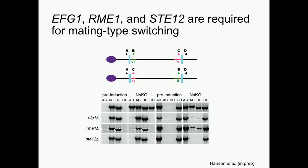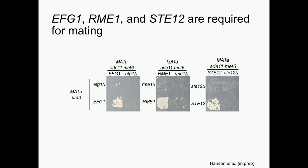Looking at the phenotypes for the ability to switch mating types: whether you're starting in A orientation or alpha orientation, if you delete any of these three genes — EFG1, RME1, or STE12 — you get a reduction or complete abolishment of the ability to switch mating type. We also looked at mating ability, and similarly, when you knock out any one of these transcription factors, you lose your ability to mate, as shown on these plates that selectively grow diploids.